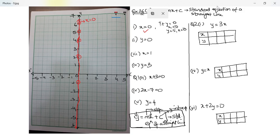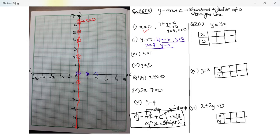Now the next one is y equal to zero. y remains zero whatever be the value of x. If x is three, y is zero. If x is seven, y is still zero. So this line, which is the x-axis, is the line y equal to zero. It's a good habit to put an arrow and write the equation of the line you've plotted. This is y equal to zero and this is x equal to zero.